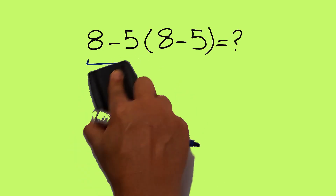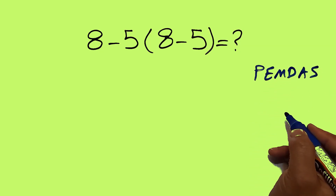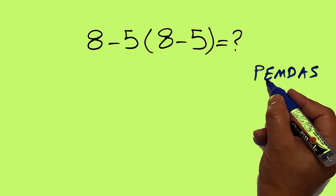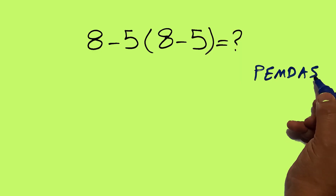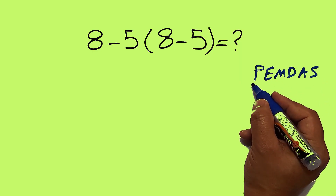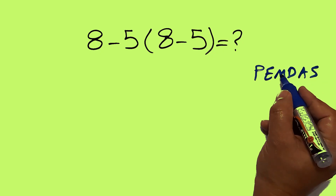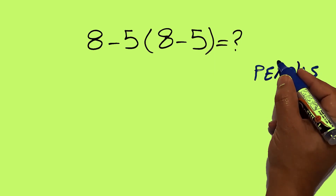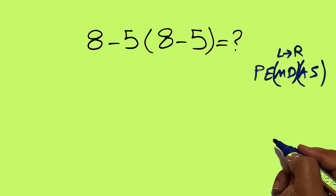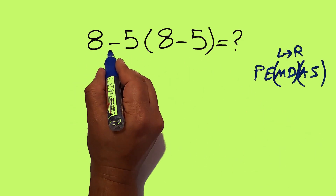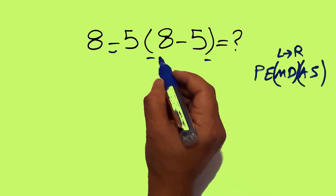Because according to the order of operations, which is PEMDAS: P stands for parentheses, E stands for exponents, M and D stands for multiplication and division, and A and S stands for addition and subtraction. First we have to do parentheses, then exponents, then multiplication and division, and finally addition and subtraction. As we know, multiplication and division have equal priority and we have to work from left to right, and the same applies to addition and subtraction. Here in this expression we have this subtraction and this multiply-parentheses.